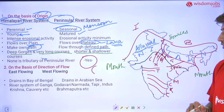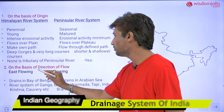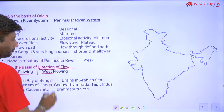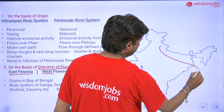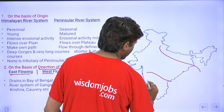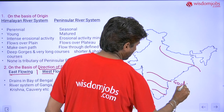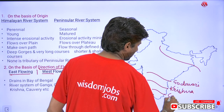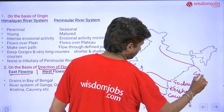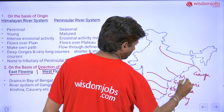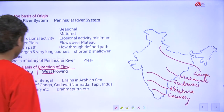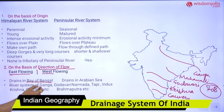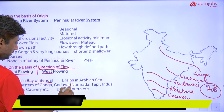Now let's look at the second classification — on the basis of direction of flow. Rivers are classified into east-flowing and west-flowing. East-flowing rivers include the Ganga, Godavari, Krishna, Kaveri, and Mahanadi. These rivers drain into the Bay of Bengal.